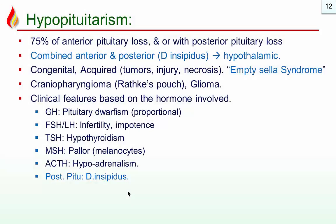Hypopituitarism is decreased pituitary function. Loss of 75% of the anterior pituitary leads to hypopituitarism, with or without posterior pituitary loss. When both anterior and posterior pituitary are affected together, we suspect hypothalamic disorders, usually tumors. Causes include congenital or acquired tumors, injury, necrosis, and empty sella syndrome. Craniopharyngioma is a tumor of epithelium from Rathke's pouch — the anterior pituitary embryological structure — or it can be due to a glioma, a CNS tumor that can occur within the hypothalamus or pituitary. All these can destroy pituitary function, leading to hypopituitarism.